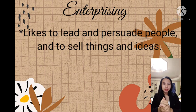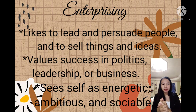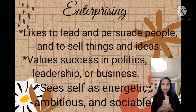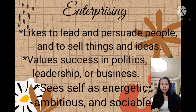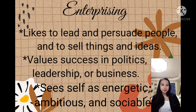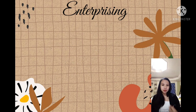Next is enterprising: likes to lead and persuade people. Good at leading people and selling things or ideas. Sees self as energetic, ambitious, and sociable. Values success in politics, leadership, or business. Just like social people, those under enterprising are good with people and have good interpersonal skills, but unlike social types, enterprising uses this skill to persuade people. They are energetic. The best example is politicians who go along with people and persuade them to vote for them.